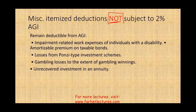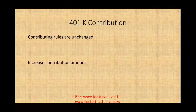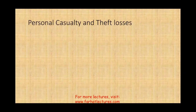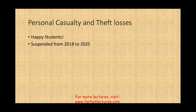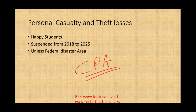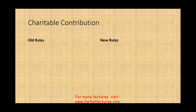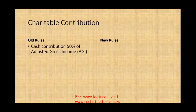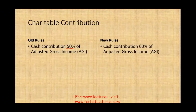For 401(k) contributions the rules didn't change but they increased the limit by about $1,000. Personal casualty and theft losses are suspended from 2018 to 2025 — though they still apply in federally declared disaster areas and may appear on the CPA exam. For charitable contributions, cash contributions were limited to 50% of adjusted gross income; that limit is now increased to 60% because they feared fewer people would itemize and therefore contribute less.